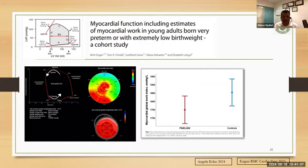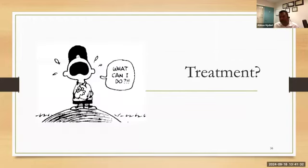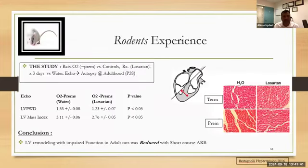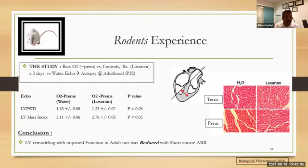We are in the era of non-invasive precision medicine, and I don't think we can get more precise than myocardial work without putting a catheter in the heart. What can we do about it? This elegant work from McGill by Marianne Bertagnoli took two sets of rats, both with oxygen-induced cardiomyopathy. One was treated with water, and one with angiotensin receptor blockers — Losartan. Rats that received ARBs had a thinner left ventricular posterior wall and lesser LV mass index compared to the water rats. By using ARBs, you could remodel and reduce preterm cardiomyopathy in the rat model.